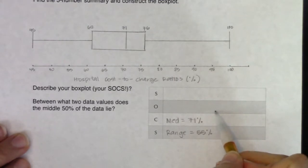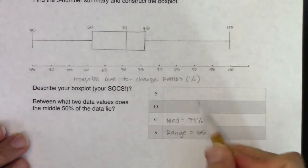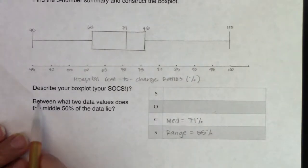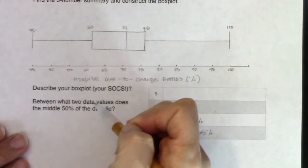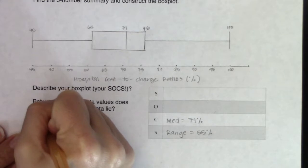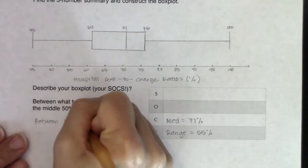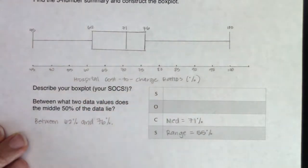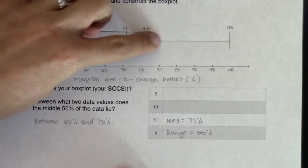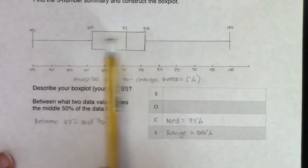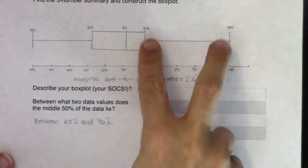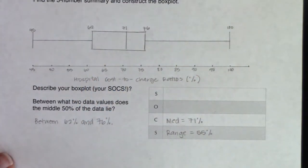We haven't talked about shape yet — when we get to the next page, we'll pick up outliers. Going back to the middle 50%: about 15 or 16 of our 31 hospitals had data values landing between 62% and 76%, with about 7 or 8 in each whisker region. Now I'll flip over to show you how to do this on your calculator.